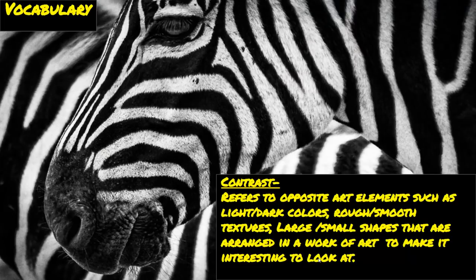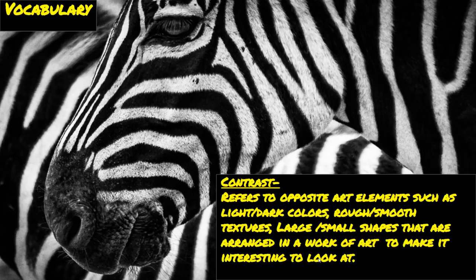Our first vocabulary word is contrast, which refers to opposite art elements such as lines, colors, textures, and shapes. When opposite art elements are arranged in a work of art, it makes it look interesting. Opposite elements can be things like light and dark colors, rough and smooth textures, large and small shapes. A zebra is a great example of contrast in nature. We see contrast in color with black and white, and contrast in texture between smooth and rough.